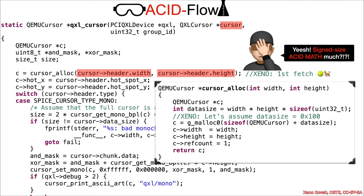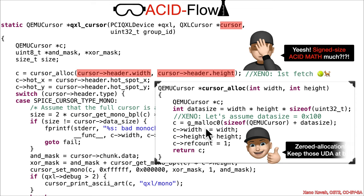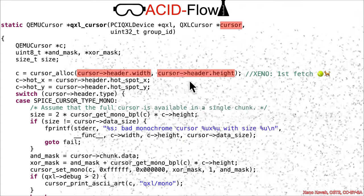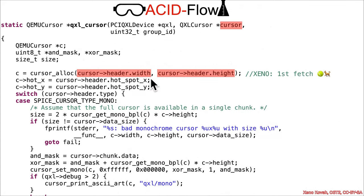For now, let's assume the data size calculates out to be 0x100. What is good is that gmalloc0 is actually a zeroing allocator — that's good from the use-after-free vulnerability perspective. We don't have to worry about uninitialized data, and then those acid values get filled in. There was an allocation which is zeroed at least.